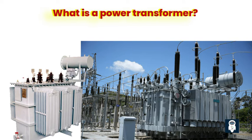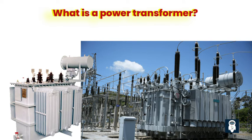Power transformers operate on the principle of electromagnetic induction. When an alternating current (AC) flows through the primary winding, it creates a magnetic field that induces a voltage in the secondary winding. This process allows for the efficient transfer of electrical energy from the primary side to the secondary side with minimal loss. Power transformers are designed to be highly efficient and reliable, and are equipped with cooling systems, such as oil or air cooling, to dissipate heat generated during operation.